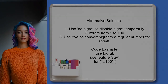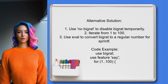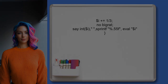An alternative approach to downgrade a BigRat involves using the NoBigRat pragma. This user suggests that while iterating from 1 to 100, you can disable BigRat temporarily. Then you can use eval to convert the BigRat instance into a regular numeric value suitable for SprintF.